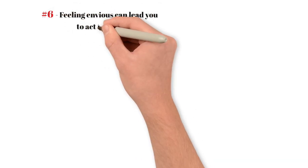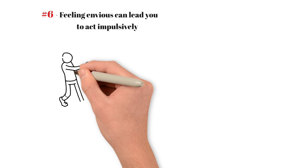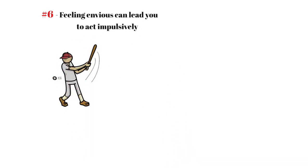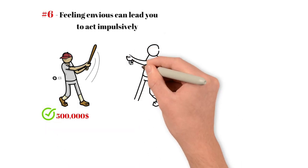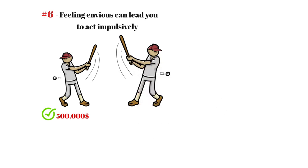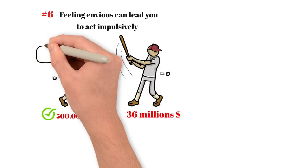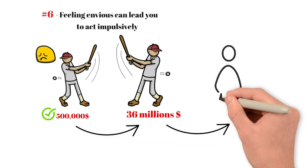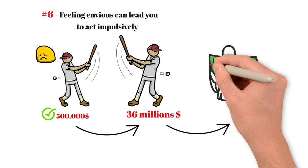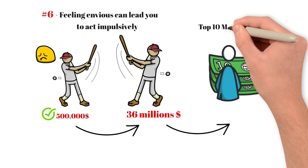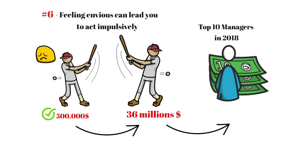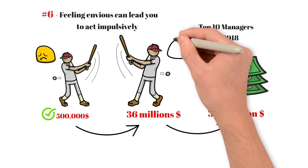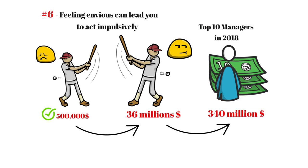Number six: Feeling envious can lead you to act impulsively. Consider a young baseball player earning $500,000 annually. By any reasonable measure, he's well off. However, if he's on the same team as a superstar like Mike Trout, who makes $36 million a year, suddenly the rookie isn't satisfied with his earnings. He desires what others, like Trout, have. On the flip side, high earners like Trout compare themselves to those who make even more. To be among America's top 10 highest paid hedge fund managers in 2018, for instance, you needed to earn at least $340 million that year. In that context, even someone like Trout appears comparatively modest. So when is enough?